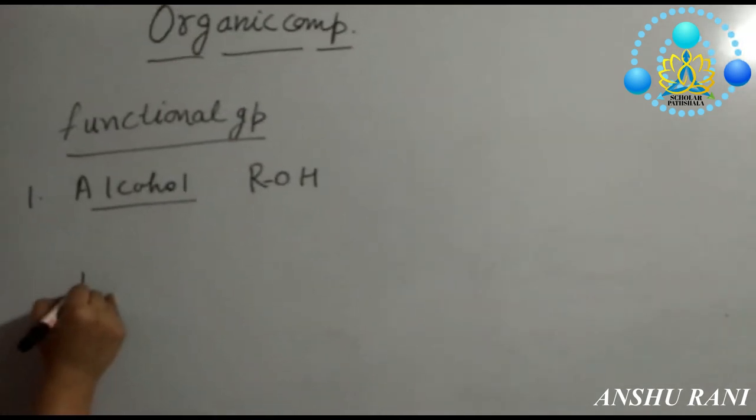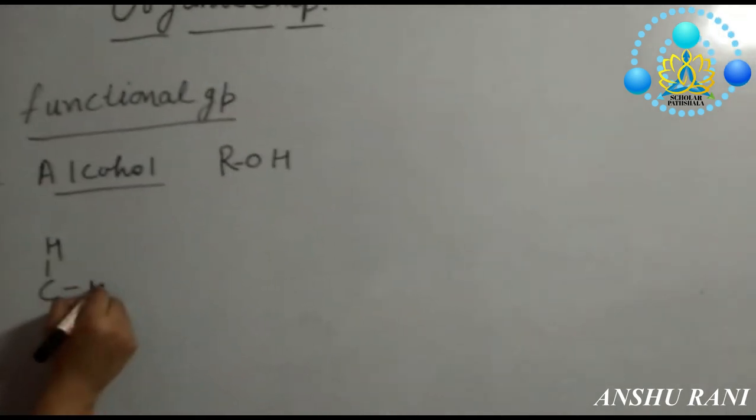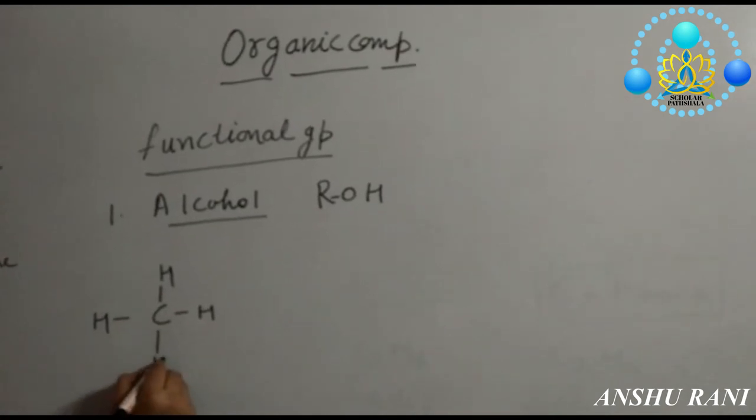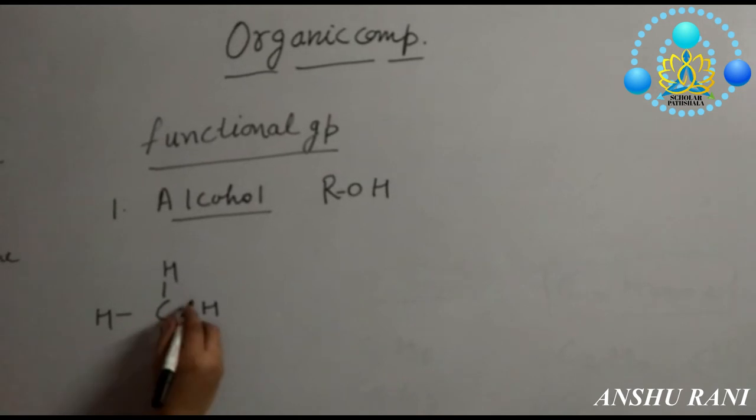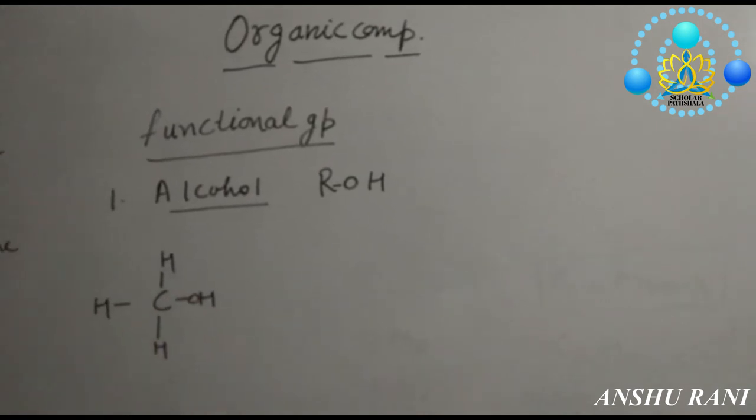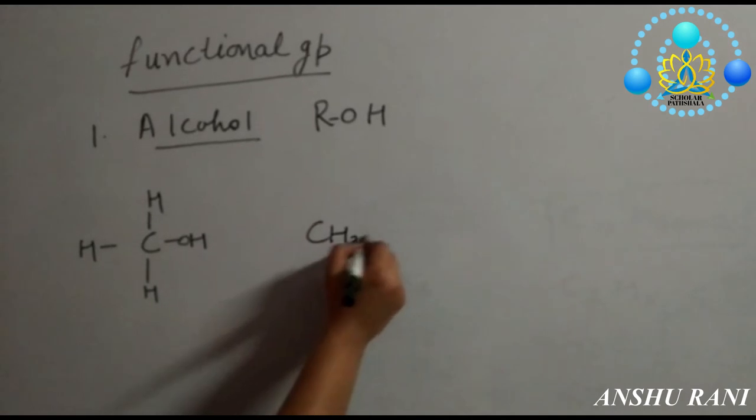Say if you are having first structure of alkane that is methane, what you have to do? You have to replace one of the hydrogen atoms with OH. So its formula will become CH3OH.